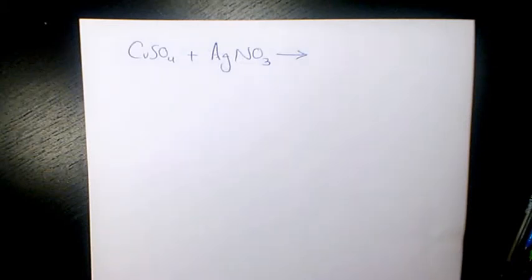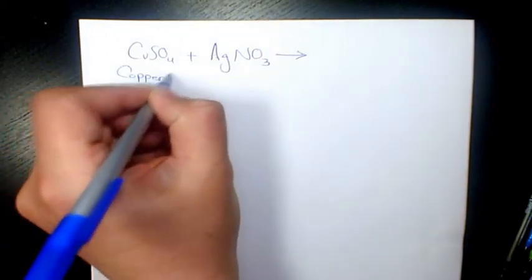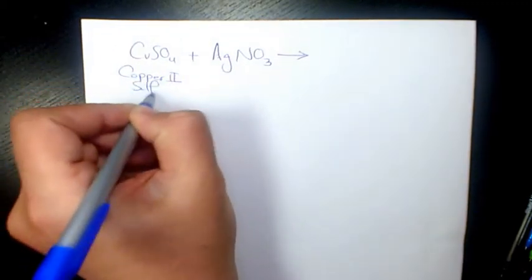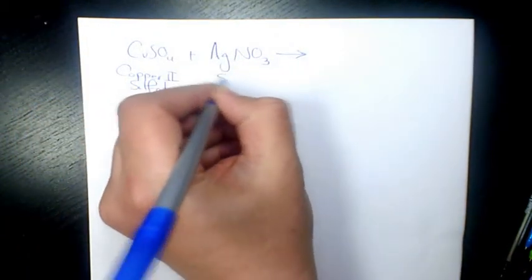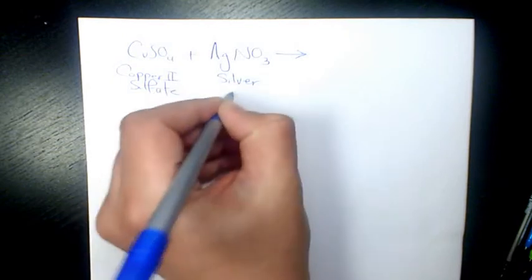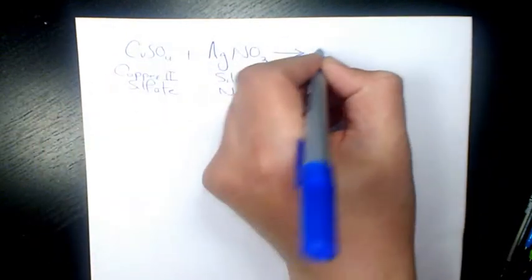What's up guys, this is Massey. Welcome to another video. In this video I want to show you the reaction between CuSO4 and AgNO3. CuSO4 is copper(II) sulfate and AgNO3 is silver nitrate. So when they react we're gonna have...